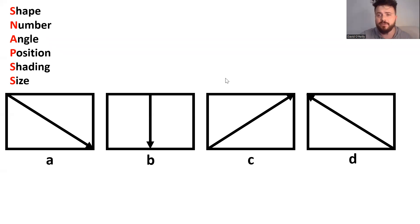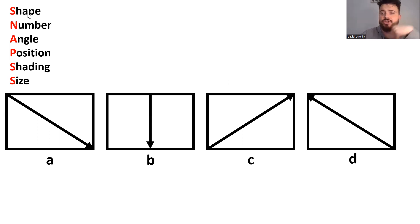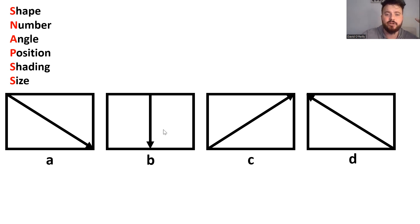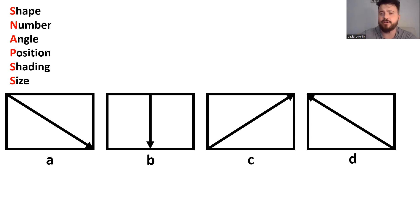SNAPS can be applied across many different types of non-verbal reasoning. In this question, if we think about the shape involved, we can see we've got a rectangle with an arrow in each object. Every object has a rectangle and an arrow, so in terms of shape, nothing there helps us find the odd one out.